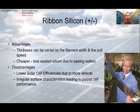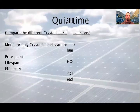For all types of panels, this also has pros and cons. Let's see them. First, the advantages. Its thickness can be varied easily by the filament width and the pull speed. It is cheaper than the two earlier discussed methods because of less wasted silicon due to sawing wafers. The disadvantages are lower solar cell efficiencies due to more defects. The irregular surface characteristic leading to poorer cell performance.